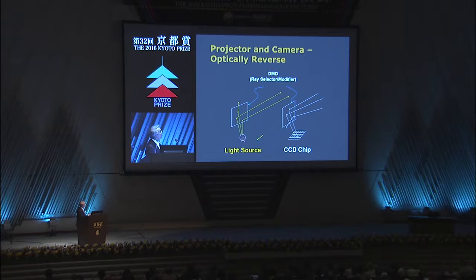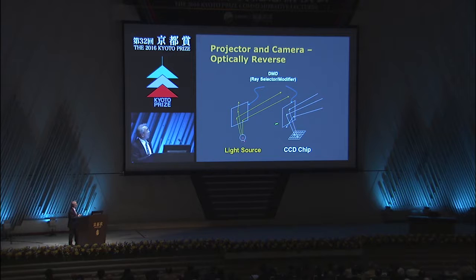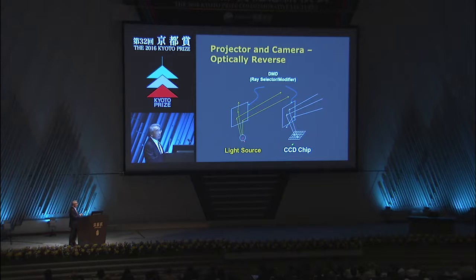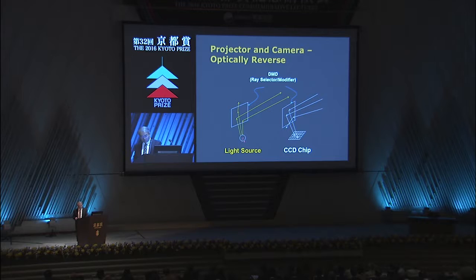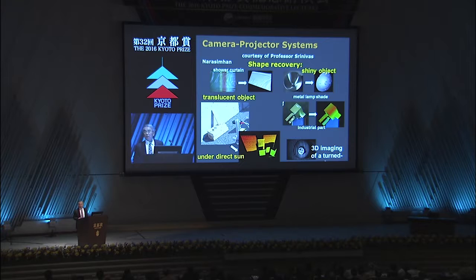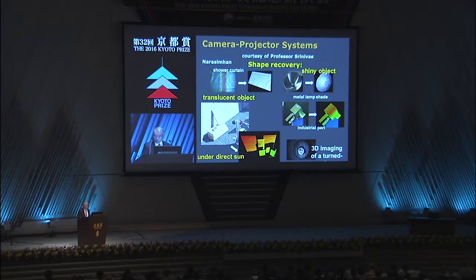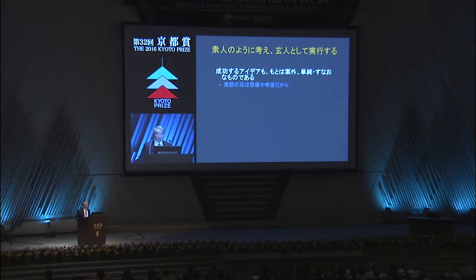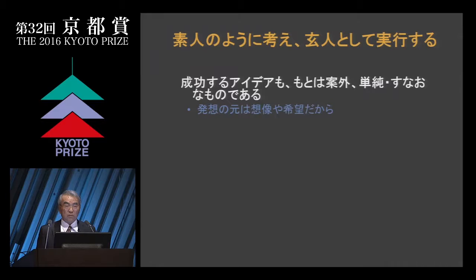If we think further on this principle, cameras and projectors have a complete dual relationship — exactly the same characteristics, just the direction of light is different. We can control both incoming and outgoing light. That is the projector-camera system, giving us multi-level control with many degrees of freedom. This is related to work by my colleague Professor Srinivasa Narasimhan in the United States. The smart headlight was quoted as an example. My motto is: think like an amateur and execute like an expert — and the smart headlight is a good example.